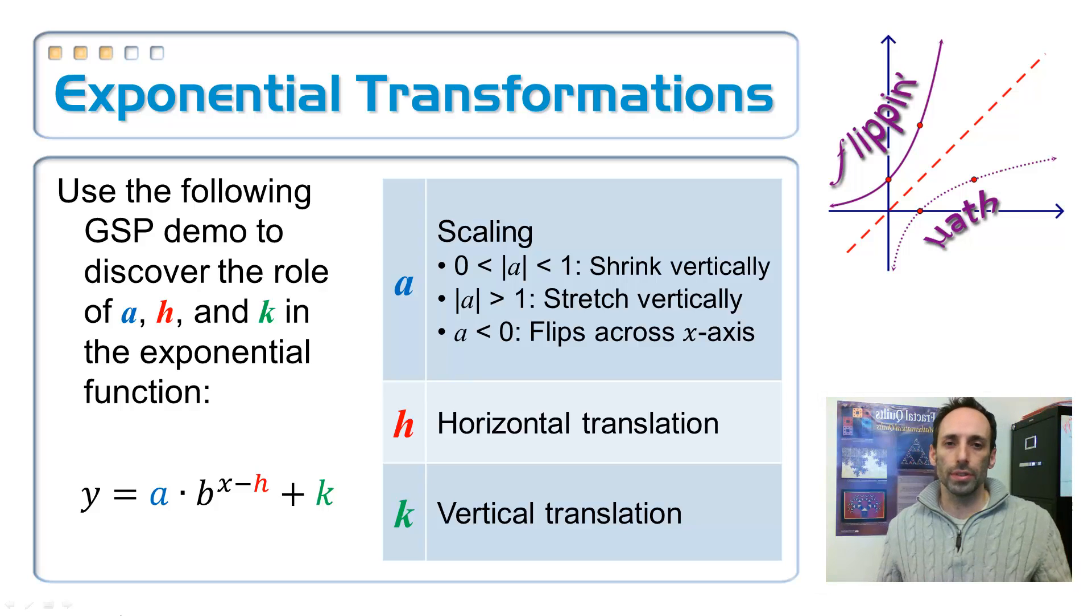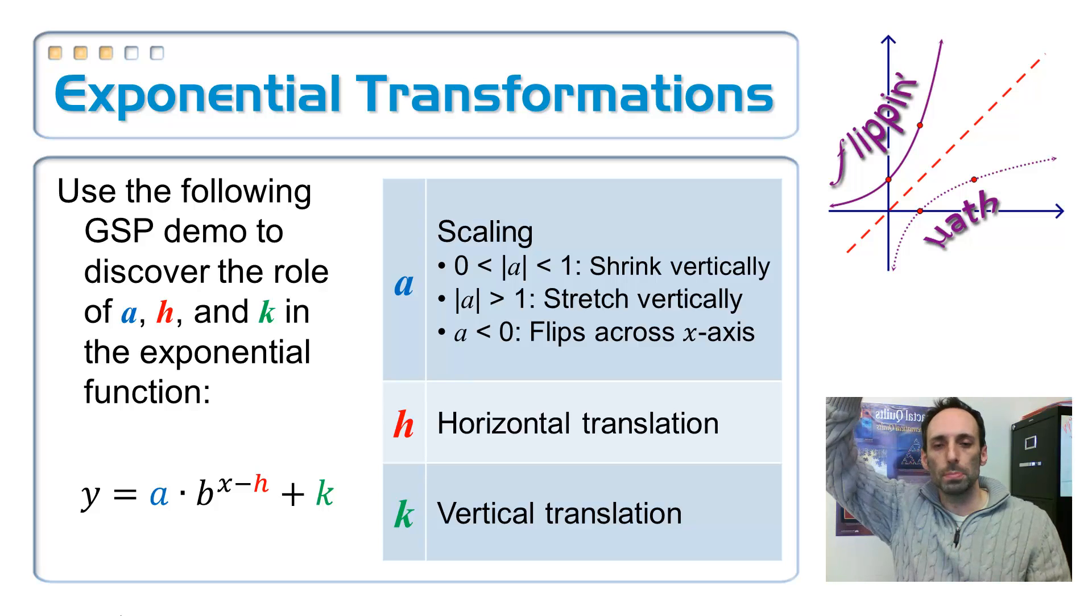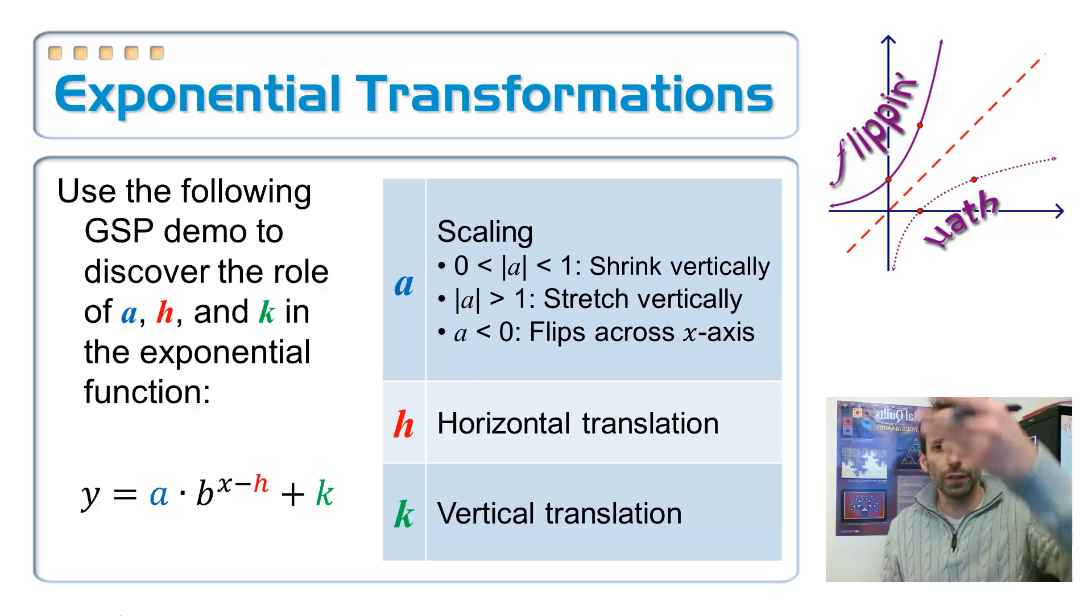Okay, well, what do you know about that? They were all the same. The A value still does the scaling. It's going to stretch it vertically. If it's bigger than 1, shrink it down vertically. If it is less than, between 0 and 1. And if it's negative, it flips it over the X axis. And the H just moves it left, right. It's always a liar.